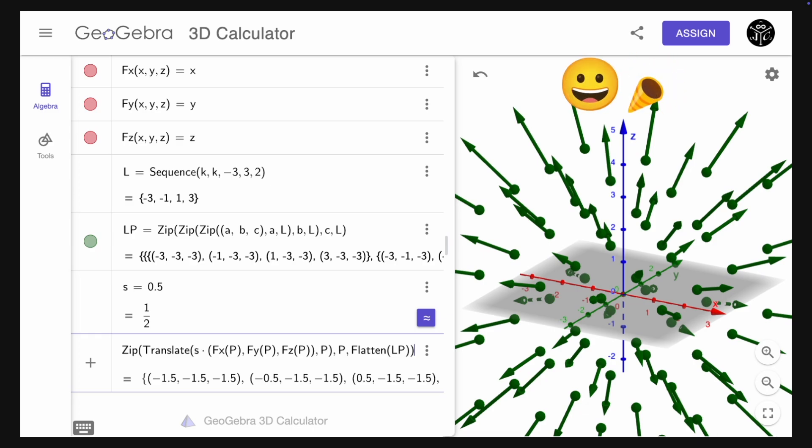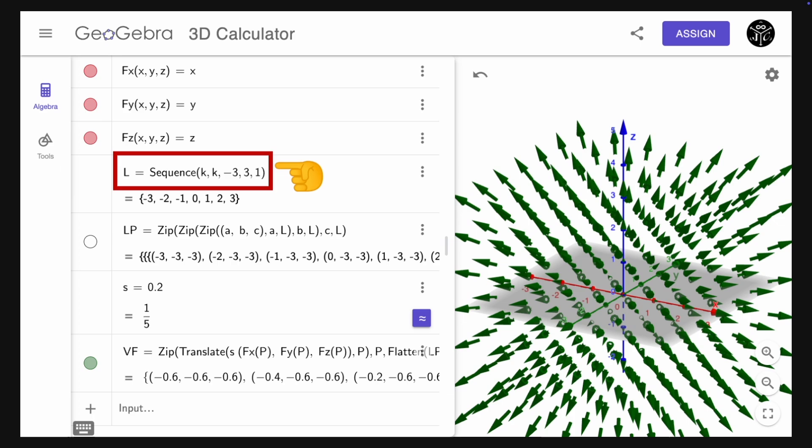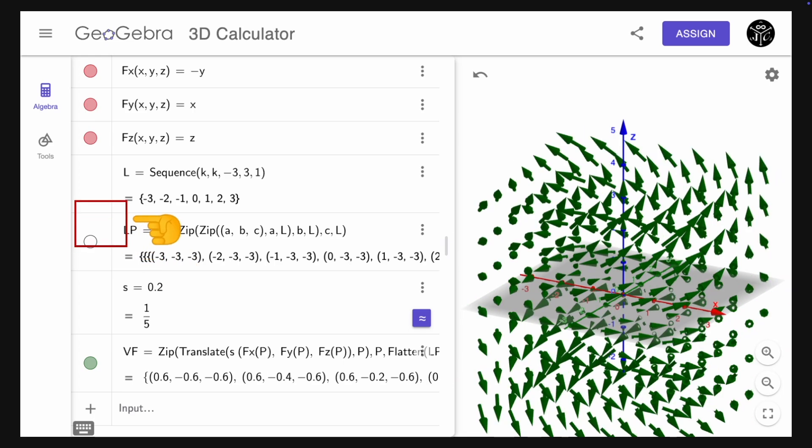And there it is, a vector field in GeoGebra. You can increase the number of vectors by changing the last parameter in the list L, modify the scale, hide the initial points if you want, and of course, you can modify the components to plot a different vector field.